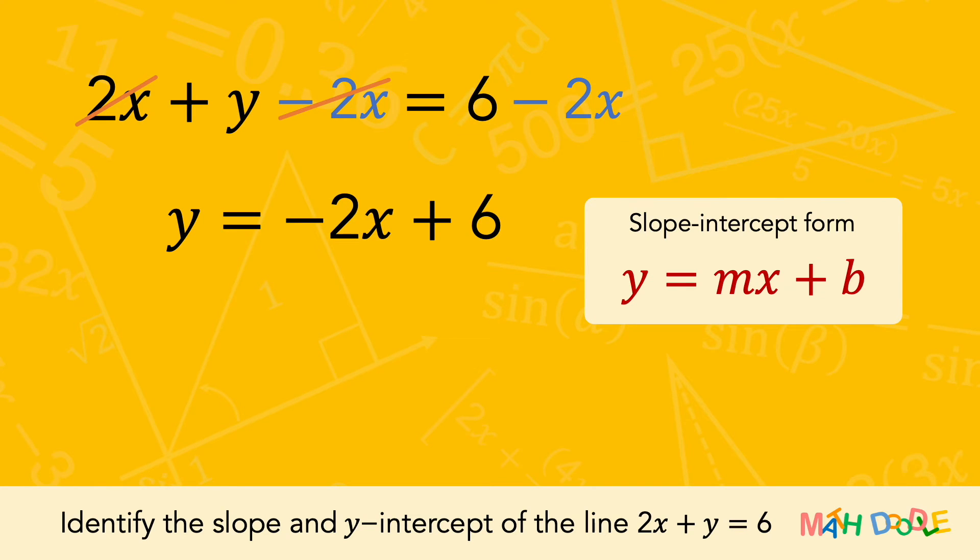In the slope-intercept form, m in front of x represents the slope, and b represents the y-intercept.